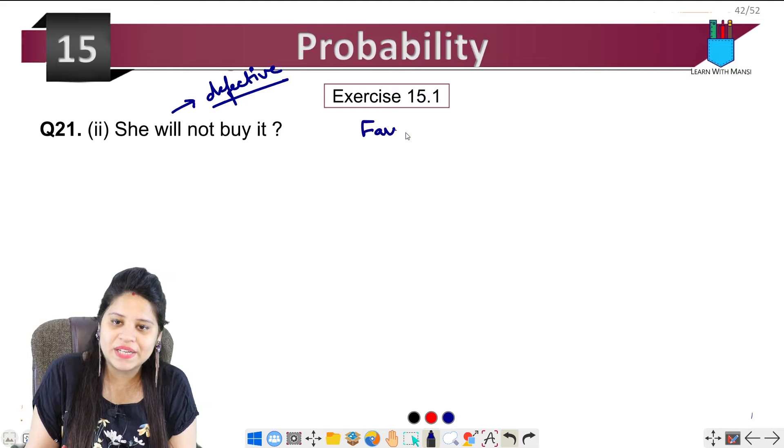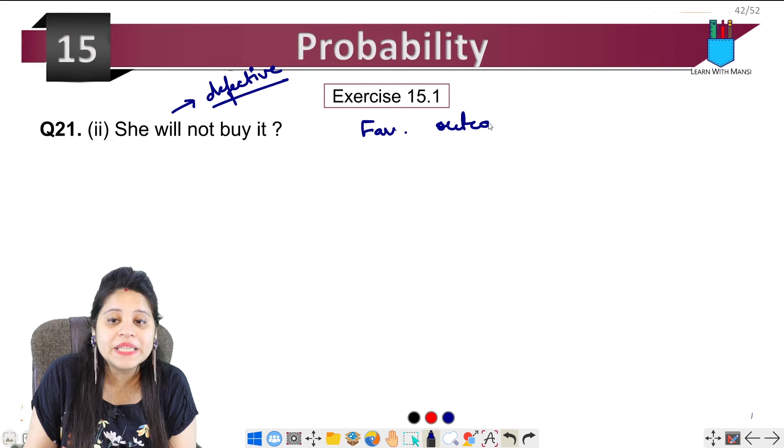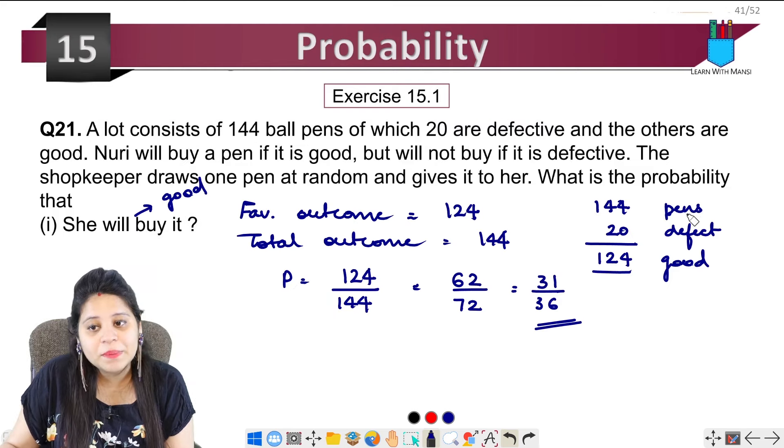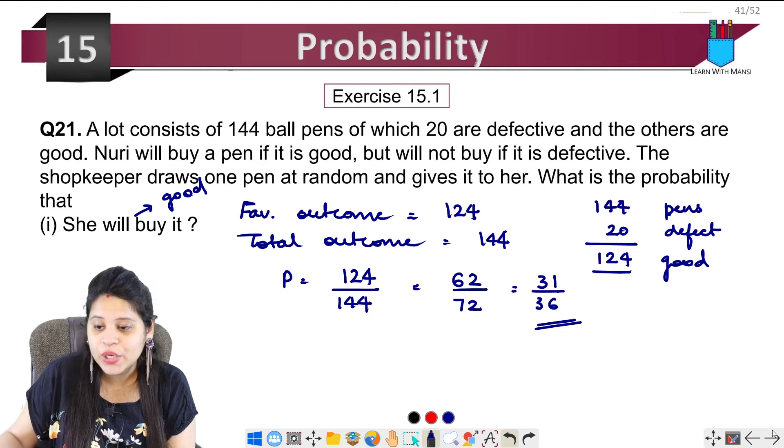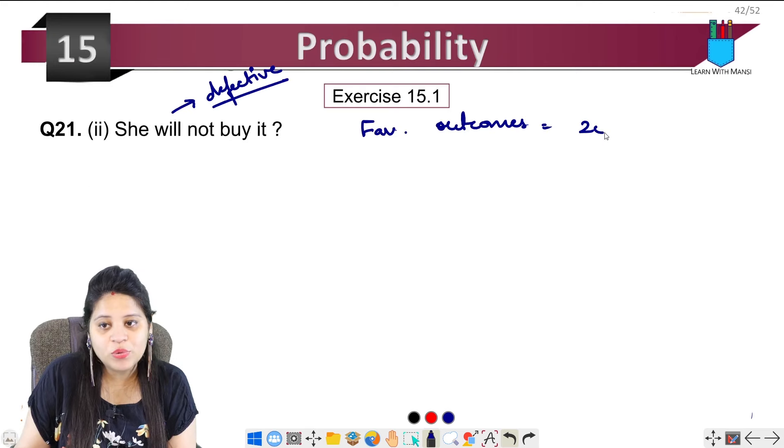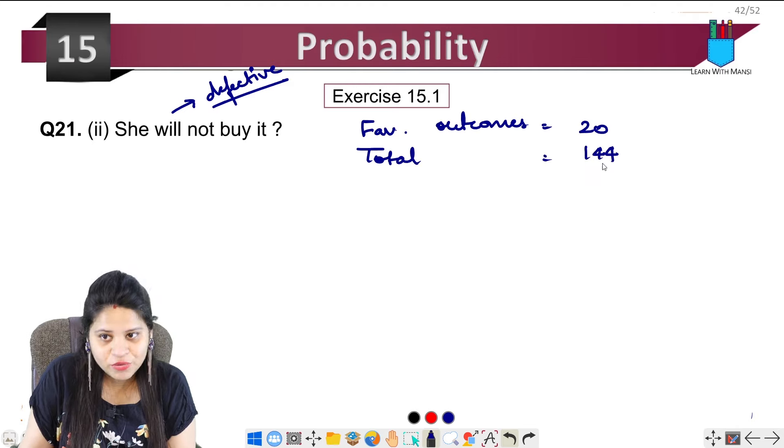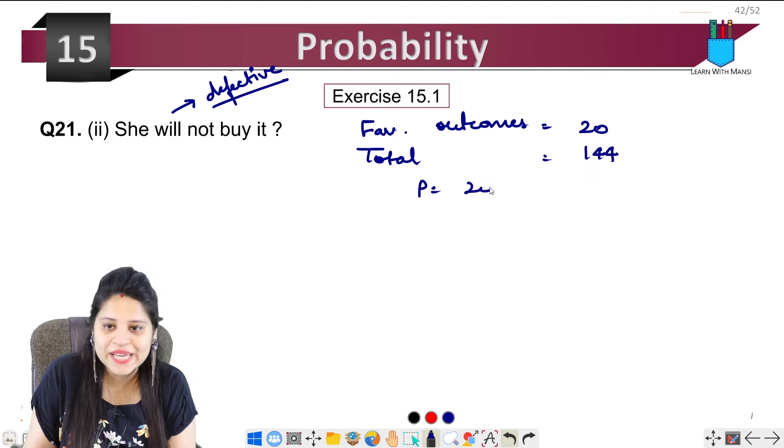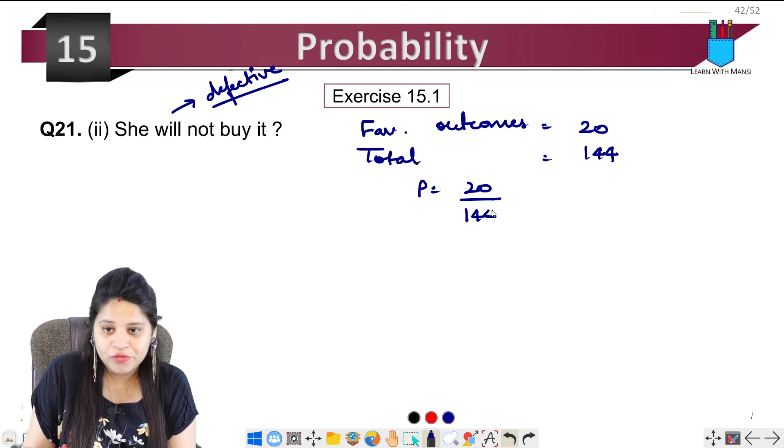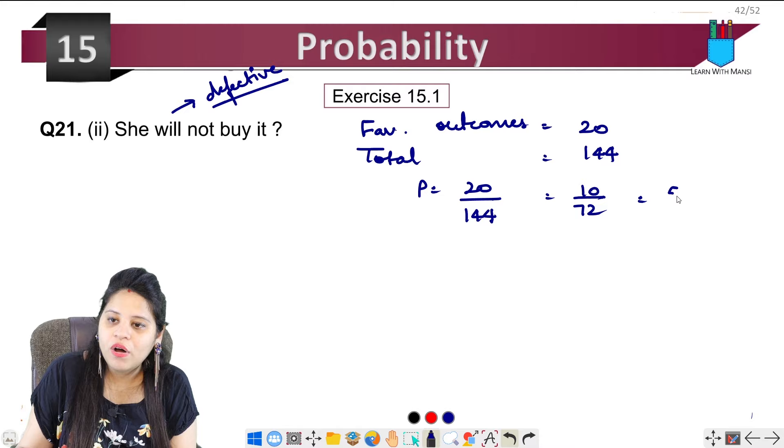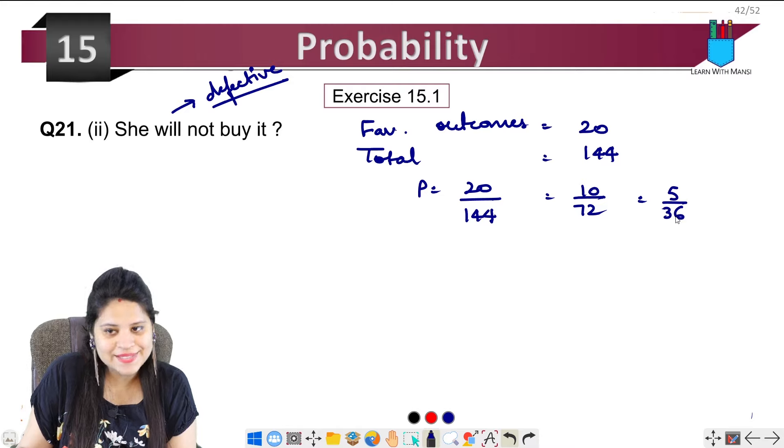Part (ii): If pen is defective, how much is our favorable outcome? The favorable outcome is defective pens, which is 20. Total pens are 144. So probability will be 20 upon 144, which simplifies to 10 upon 72, and finally 5 upon 36.